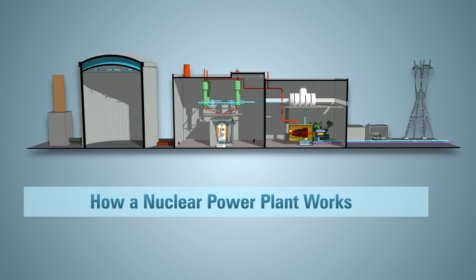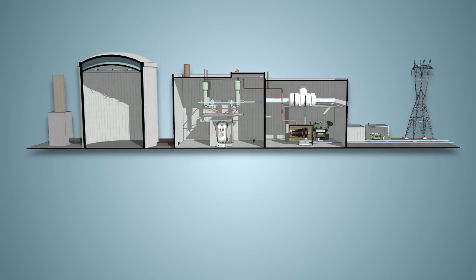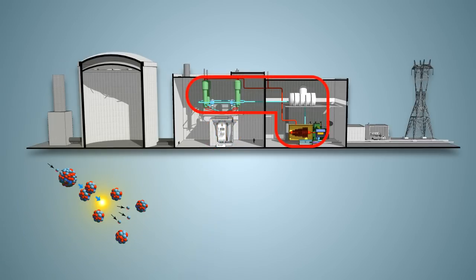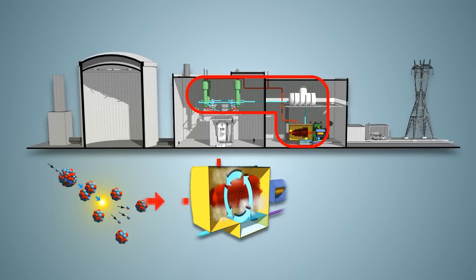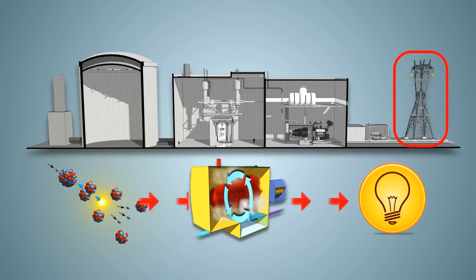But first, let's look at how a nuclear power plant works. CANDU nuclear reactors produce heat by splitting atoms of natural uranium. This produces heat to convert water into steam, which spins a turbine or generator to make electricity.